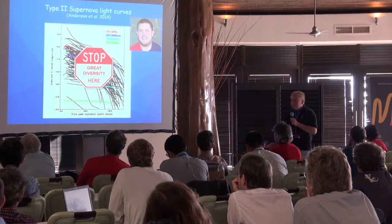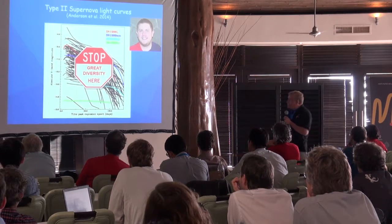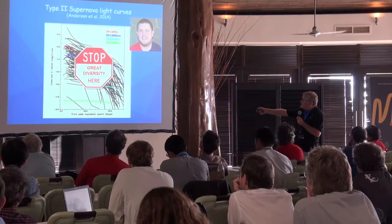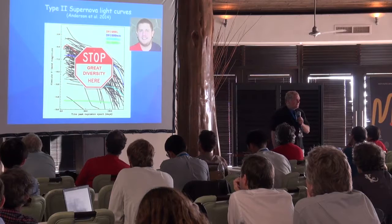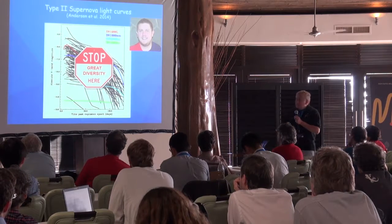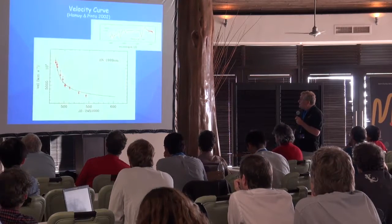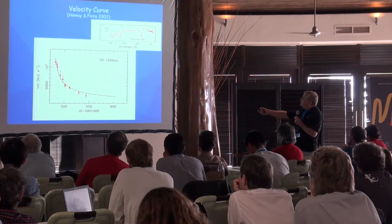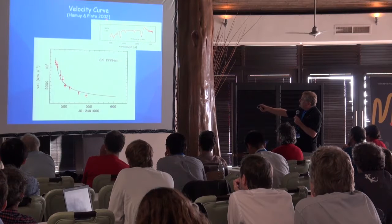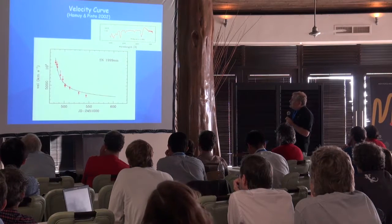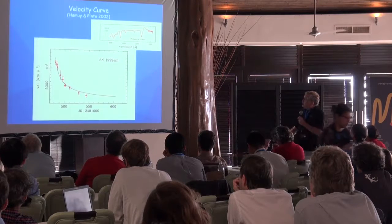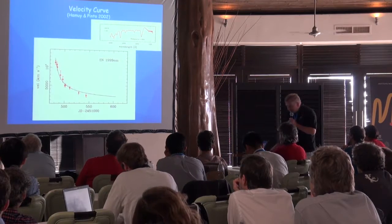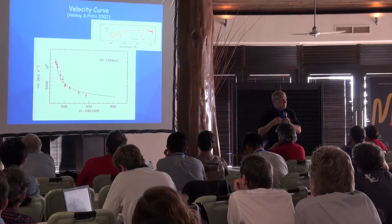We have a problem here — greater than the problem we have with Type Ia's. There is a range of at least 5 magnitudes, or a factor of 100 in luminosities. However, nature has been kind to us. With Phil Pinto in 2002, we showed that you can standardize the supernova luminosities using the expansion velocity of the ejecta.